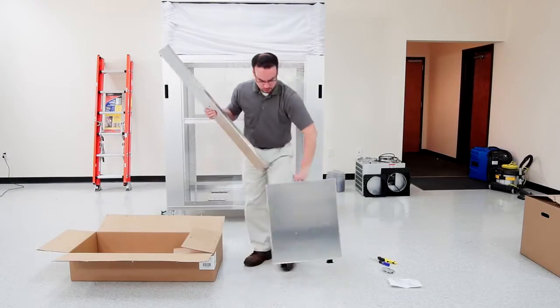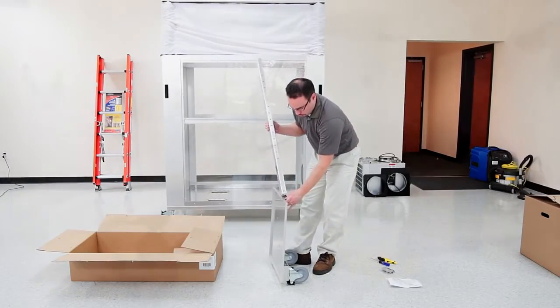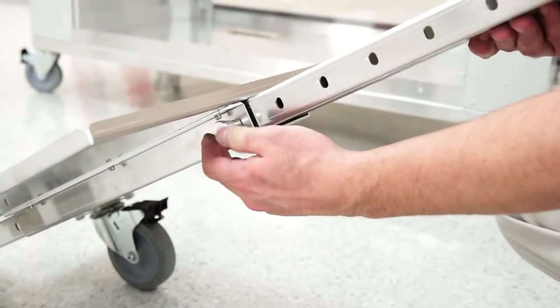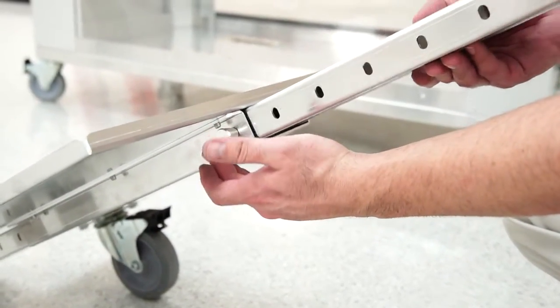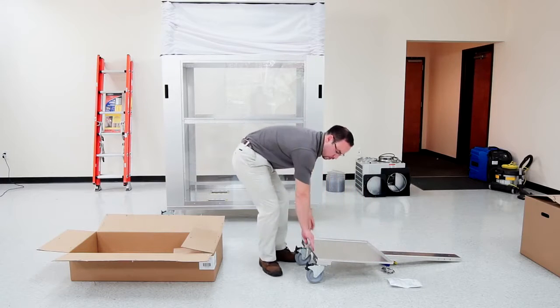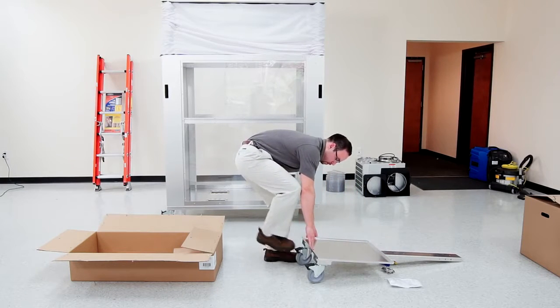Insert the caddy rail into the channel on the underside of the cart while lifting the spring latch located on the side of the channel. Make sure to unlock the casters so it's easier for you to install this on the AG8000.